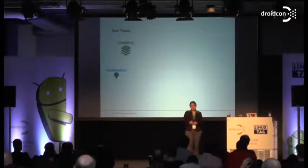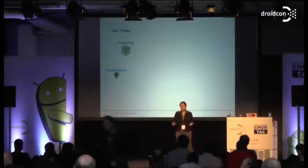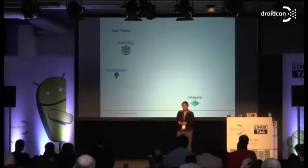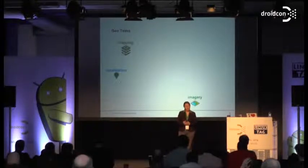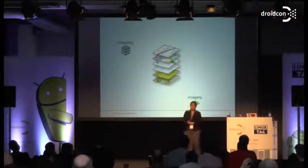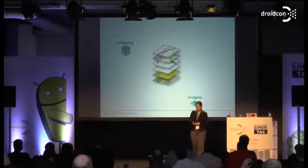Then we have another task: showing our location on a map, so we actually know where we are. Without the map, our location isn't very useful. Then we have imagery — these are photographs of the world, and they provide map layers of the world. These are just some examples of layers we can use in our map.